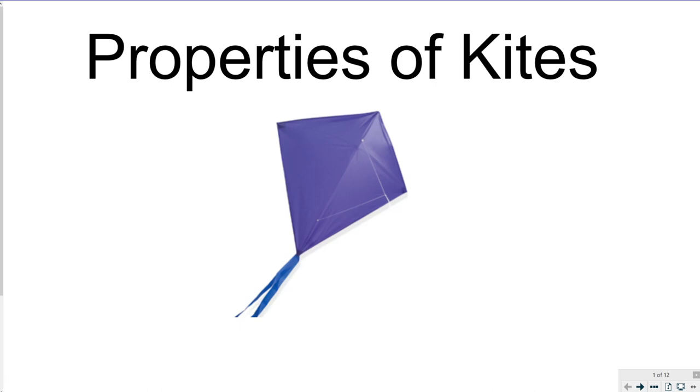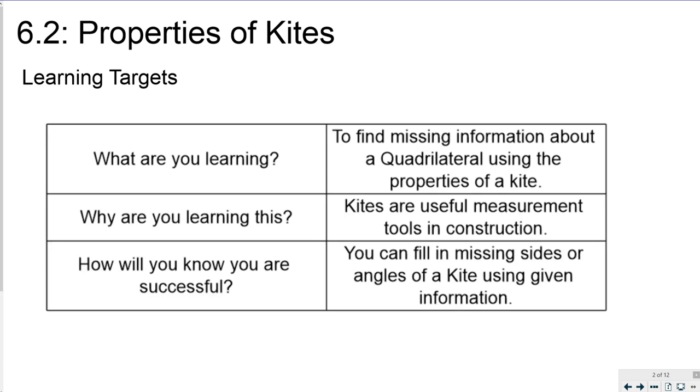Hi guys and welcome to this video on the properties of kites. We're going to learn about how to find missing information from a quadrilateral using the properties of a kite. Kites are useful measurement tools in construction and you can fill in missing sides or angles of a kite using given information if you're doing everything successfully.